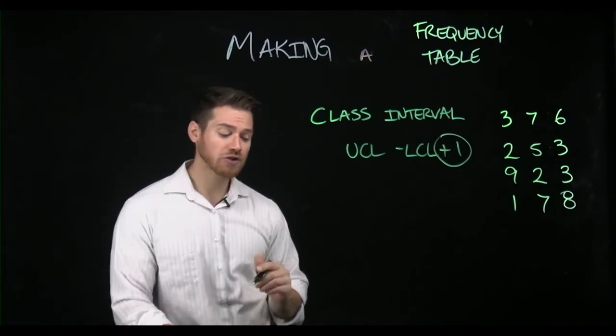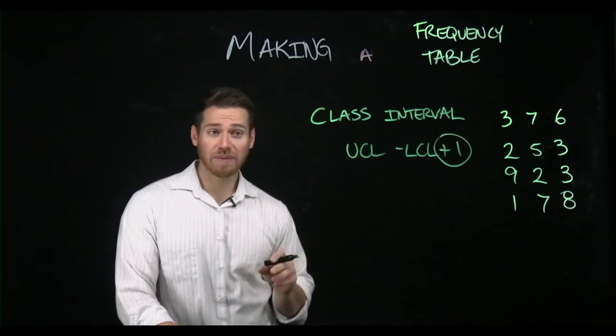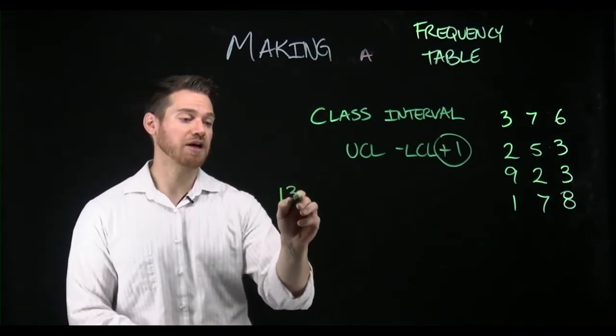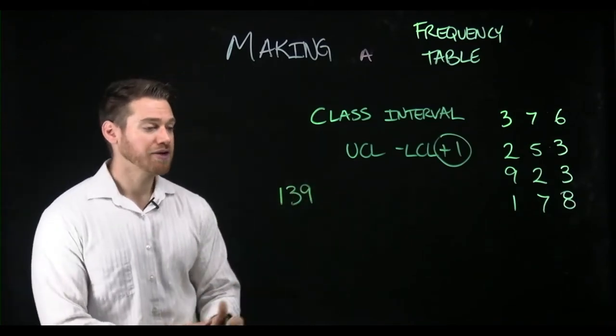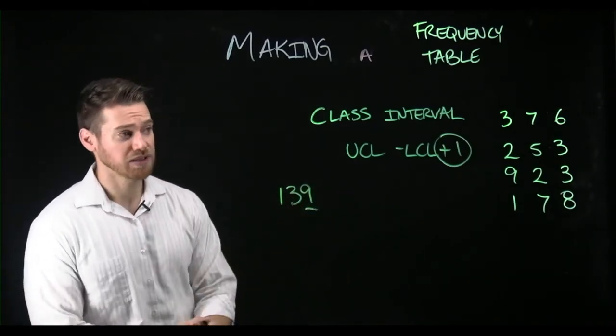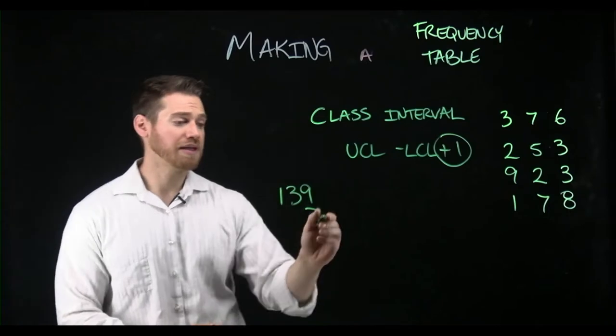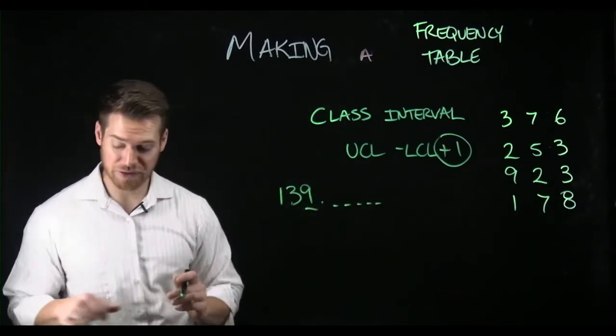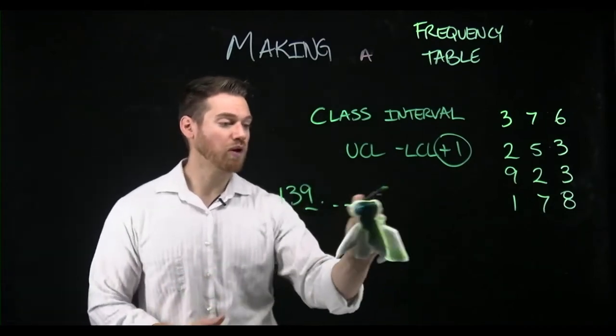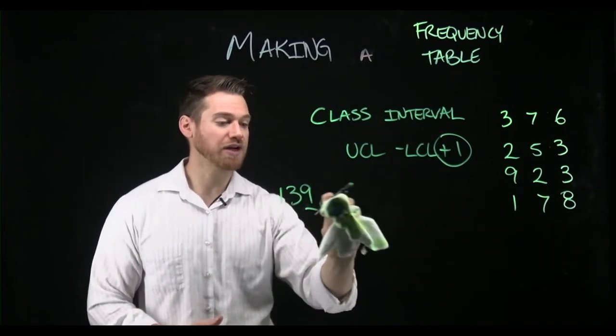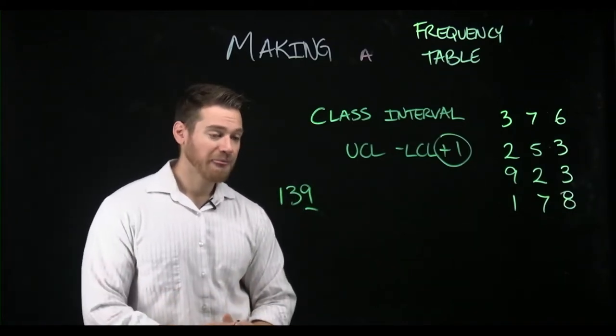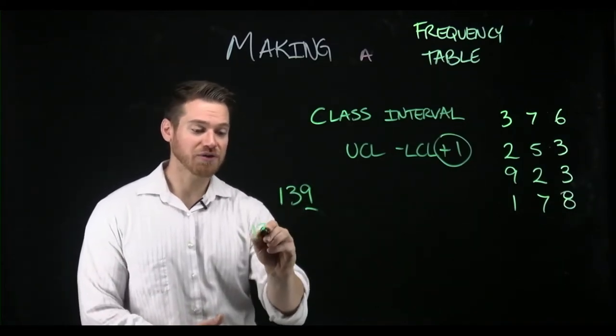If you think about real limits, imagine that you jump on your scale and you weigh 139 pounds. Your scale only happens to go to this level of precision, but there could be additional numbers in the decimal spots that we just don't have the precision to measure. The question is what values could this 139 truly represent?